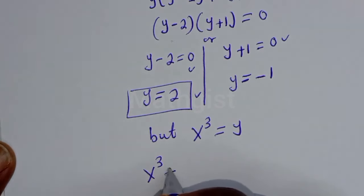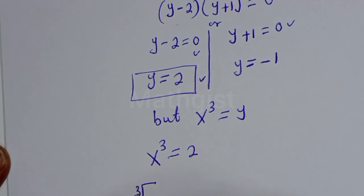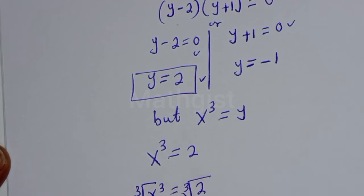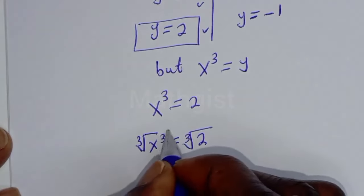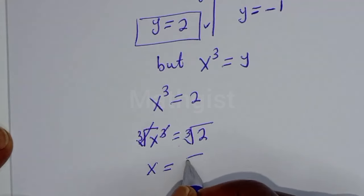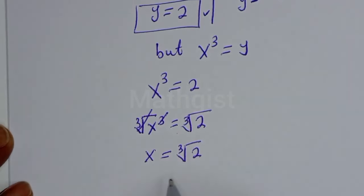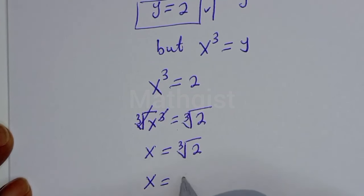Since s^3 equals y, consider the first case: s^3 equals 2. Taking the cube root of both sides, the cube root of s^3 equals the cube root of 2. This simplifies to s equals the cube root of 2, therefore s equals 2 raised to the power of 1 over 3.